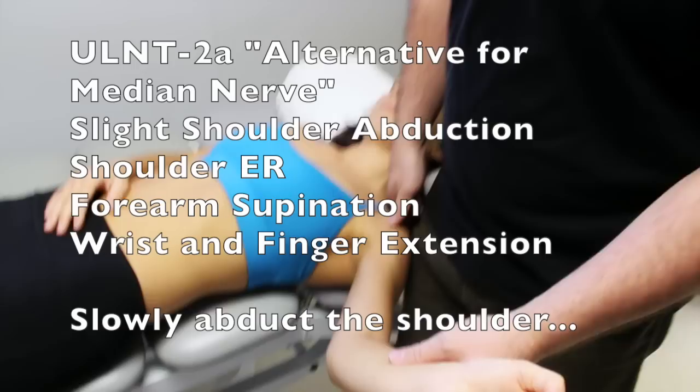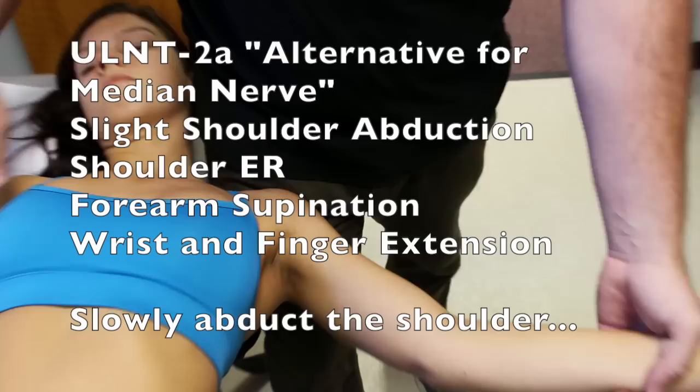An alternative way of assessing the median nerve is to come behind the patient. You're going to stabilize her scapula with your lead leg — again, that's going to be your leg that's closest to her. Her arm is going to be dropped down to her side.